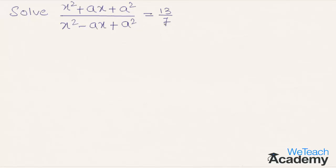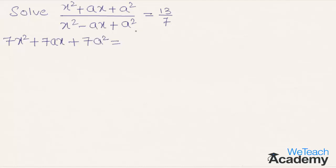Now let us cross multiply this. By multiplying 7 with the expression x squared plus ax plus a squared we get 7x squared plus 7ax plus 7a squared, equal to multiplying x squared minus ax plus a squared with 13, which gives 13x squared minus 13ax plus 13a squared.